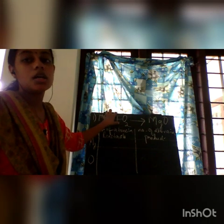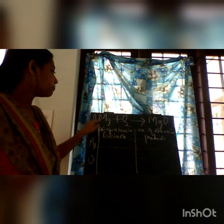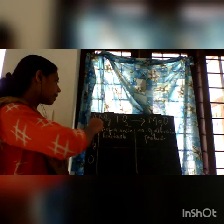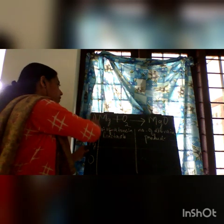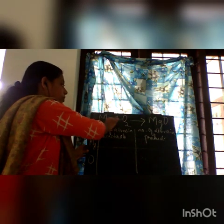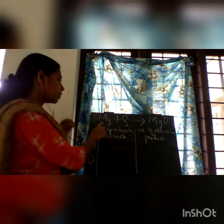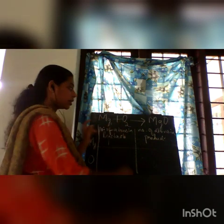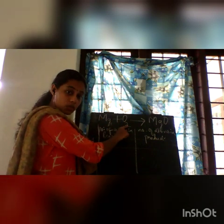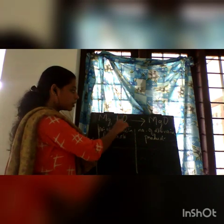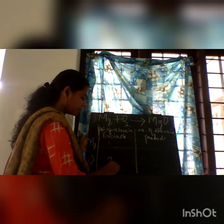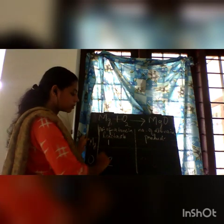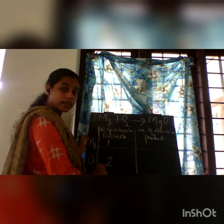In the reactants, how many Mg atoms are there? There is no coefficient and no subscript, so we assume 1. One into 1 equals 1. What about Oxygen? The subscript is 2 and the coefficient is 1, so 1 into 2 equals 2. So number of Mg atoms in reactants is 1, and number of Oxygen atoms in reactants is 2.